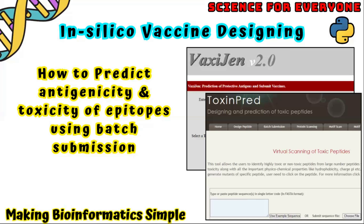As you know, I previously recorded a video series related to vaccine designing where I showed how to predict the antigenicity and toxicity of epitopes using single epitope prediction. That method was a little bit laborious because when we predict our epitopes from a protein, there are a lot of epitopes, and we have to prioritize them. In today's video I will show you that there is a specific option in VaxiJen and ToxinPred known as batch submission.